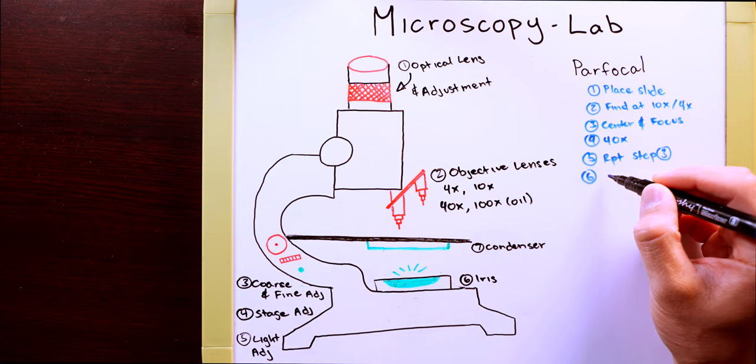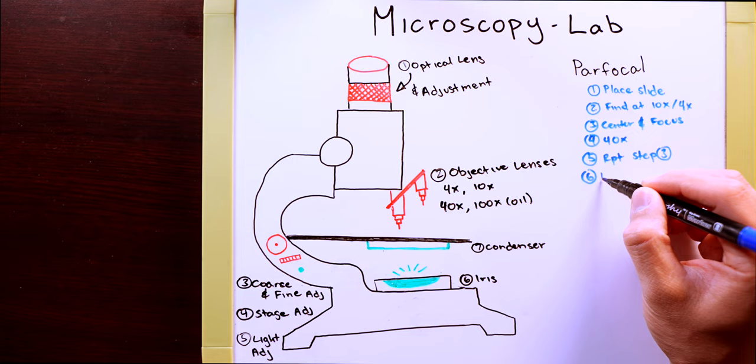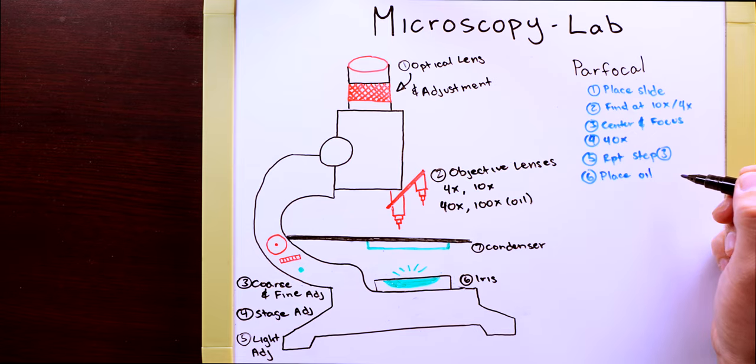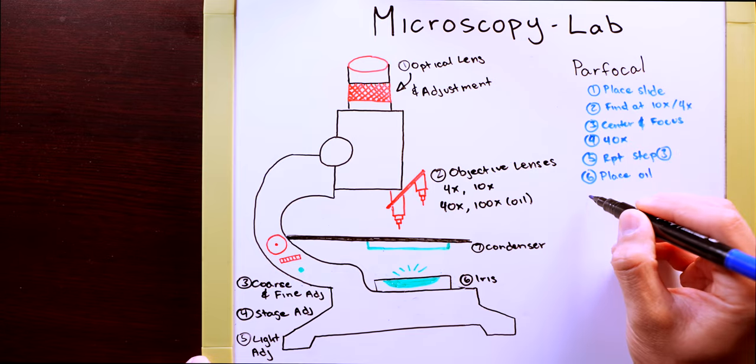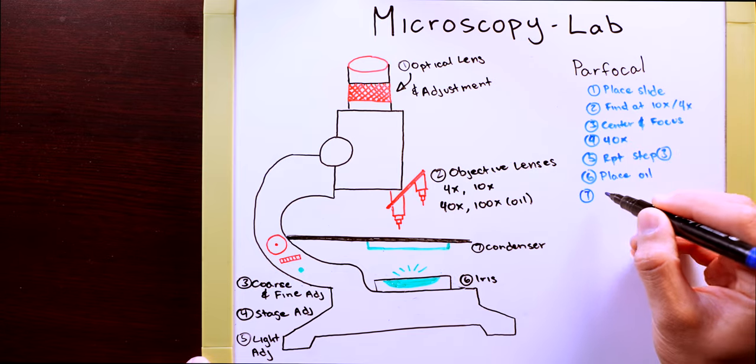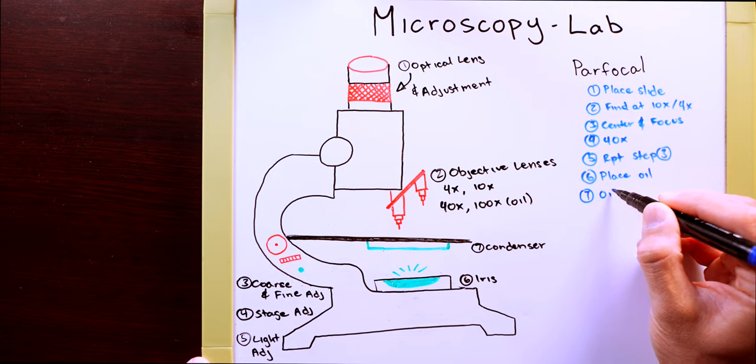That gap is going to allow you to place oil and one drop of oil immersion is just enough and you want to do this on the slide, never on the lens. So one drop of oil immersion in that gap stop between the 40 and 100x and then you will go to oil immersion or your 100x.